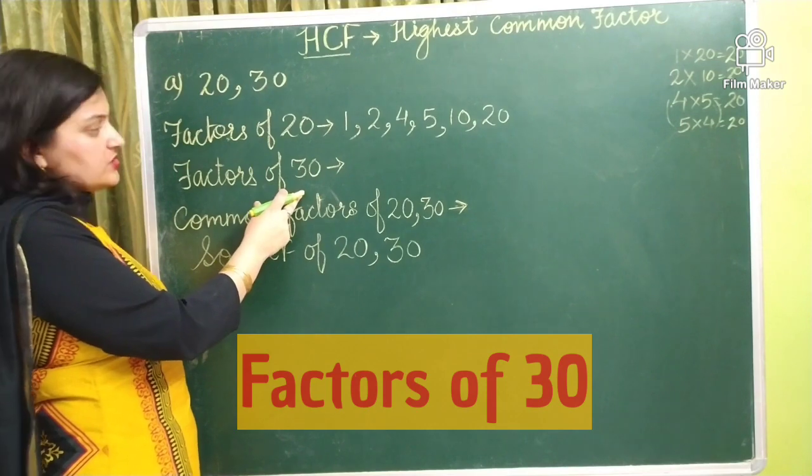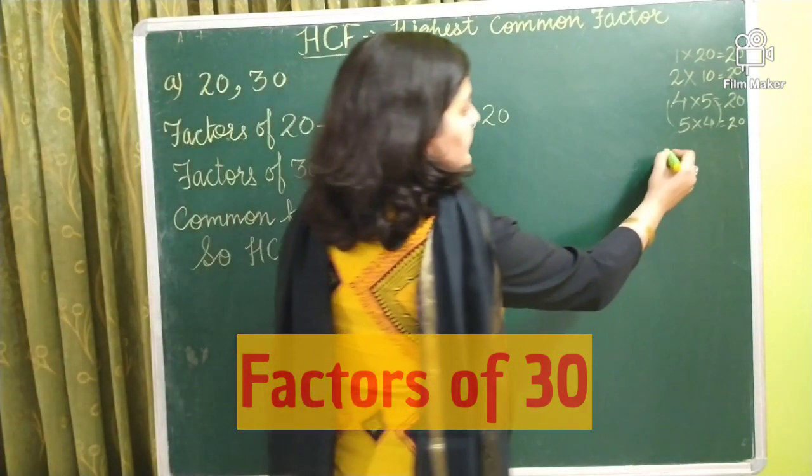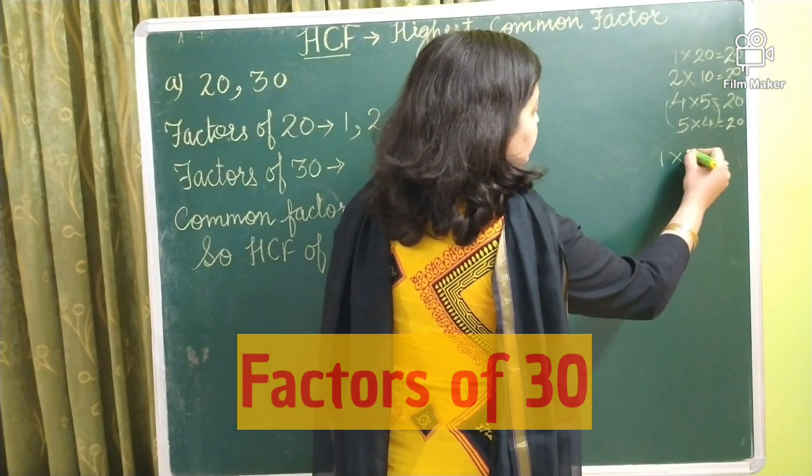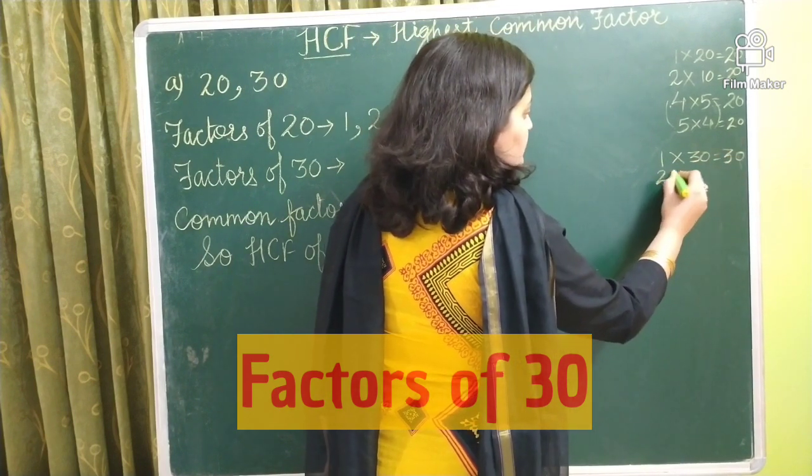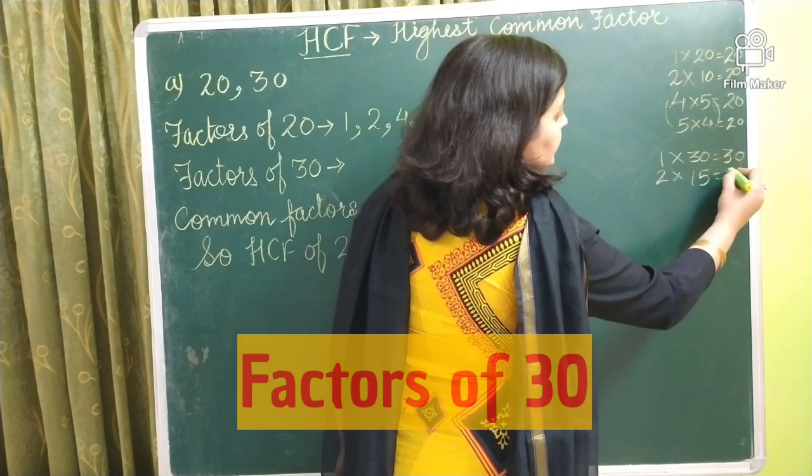Similarly we will find the factors of 30. So again we will start from number 1. 1, 30, 1 into 30, 30. Even number. So 2 will be its one factor. 2 into 15, 30.